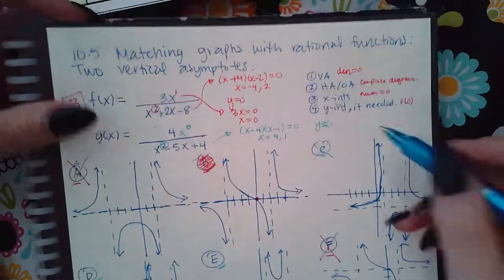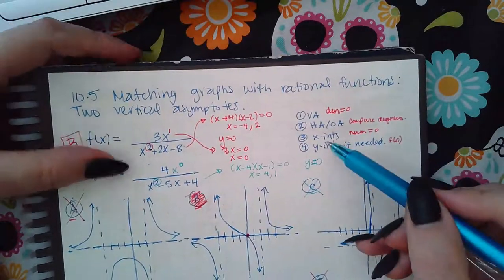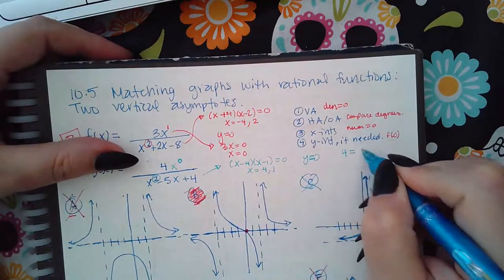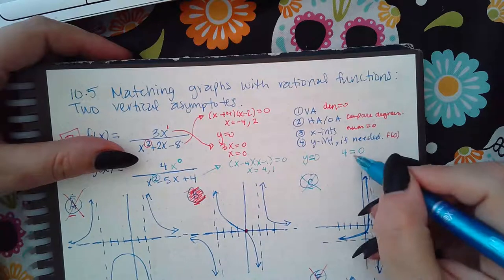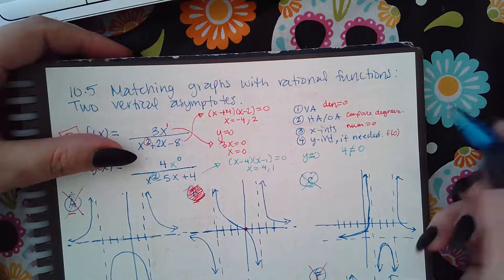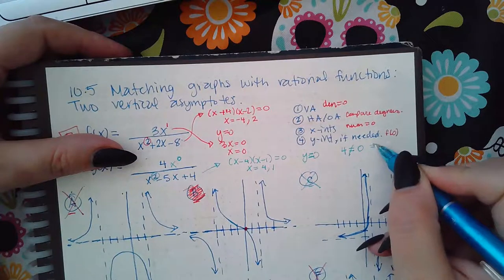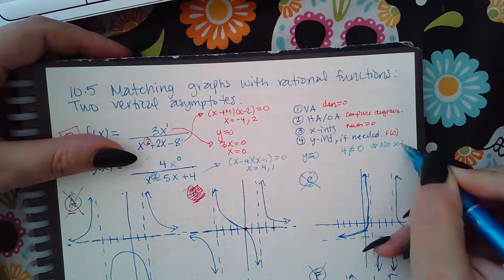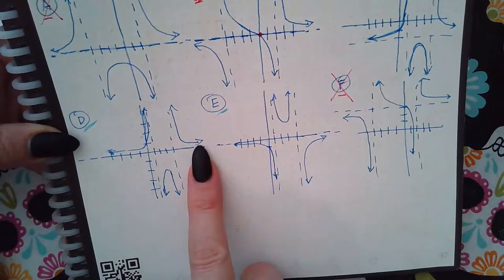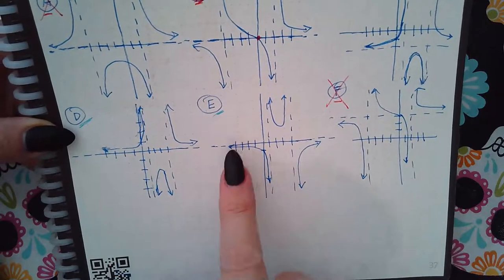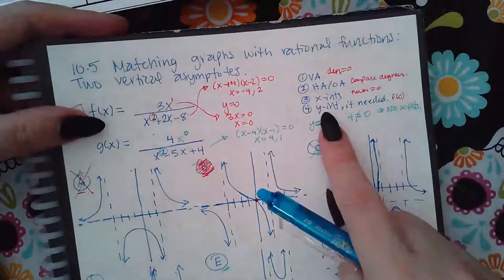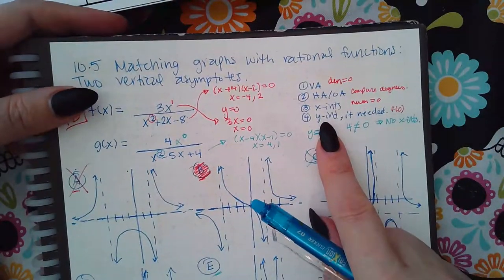To distinguish between D and E, we look at the x-intercepts. Setting the numerator equal to zero: four cannot equal zero and there's no variable to solve for, so there are no x-intercepts. Looking at graph D there are no x-intercepts, and looking at graph E there are also no x-intercepts. So I'll have to do the final verification using the y-intercept.